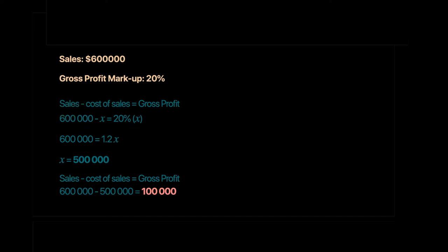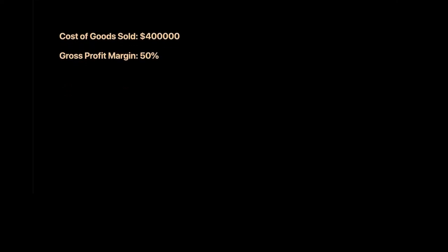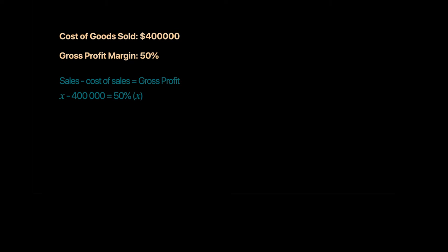Case 4: Cost of goods sold = 400,000 and gross profit margin = 50%. Gross profit margin is a percentage of sales, but sales are not given. Using the same equation — Sales − Cost of Sales = Gross Profit — let sales = X. Gross profit = 50% of X = 0.5X.